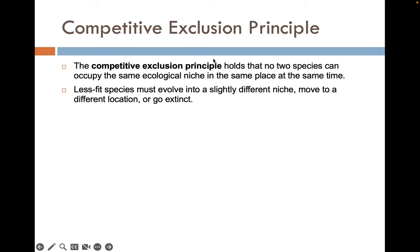The competitive exclusion principle holds that no two species can occupy the same ecological niche in the same place at the same time. If American alligators are living in one part of the Everglades, there can't be another species filling that same role in the ecosystem in the same place at the same time. The less fit or less competitive species has to evolve into a slightly different niche, move to a different location, or go extinct.